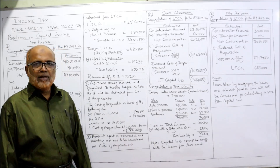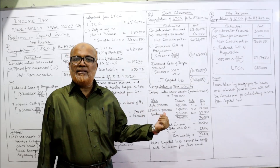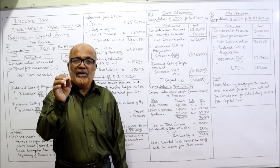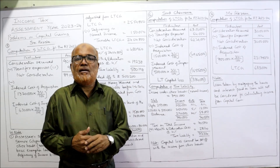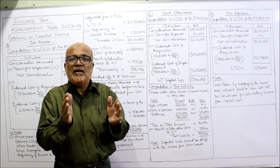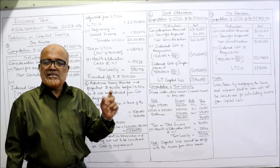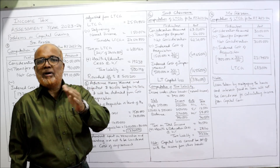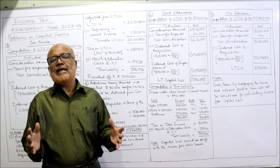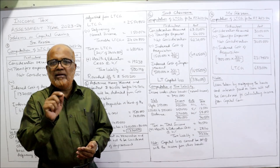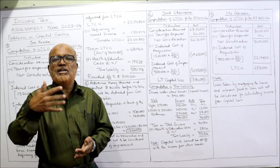Tax liability is Rs. 70,500. Adding 4% health and education cess = Rs. 2,820. Total tax = Rs. 73,320. This is the tax liability. Remember and note in examination: capital loss cannot be set off from other incomes. Capital loss can be set off only from capital gain. If it cannot be set off, it should be carried forward to the next year. If in the next year there is long-term capital gain, then the long-term capital loss can be set off. Always maintain running notes — keep a notebook, pen, and calculator ready.